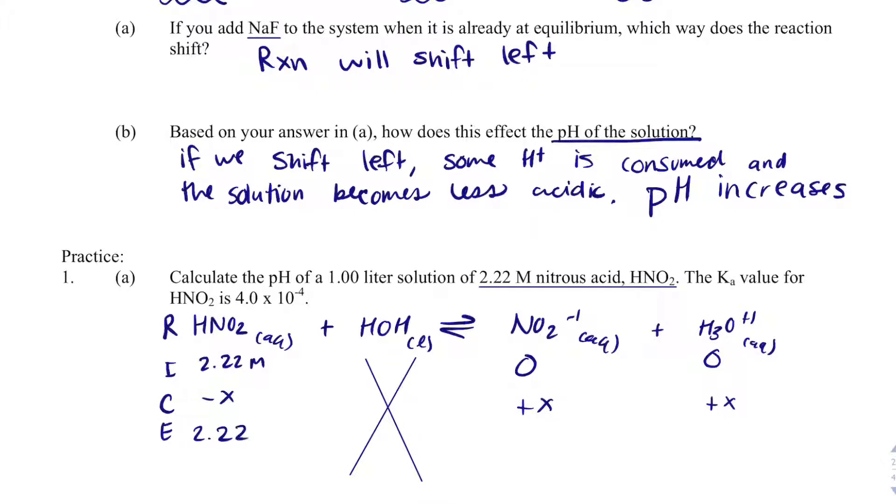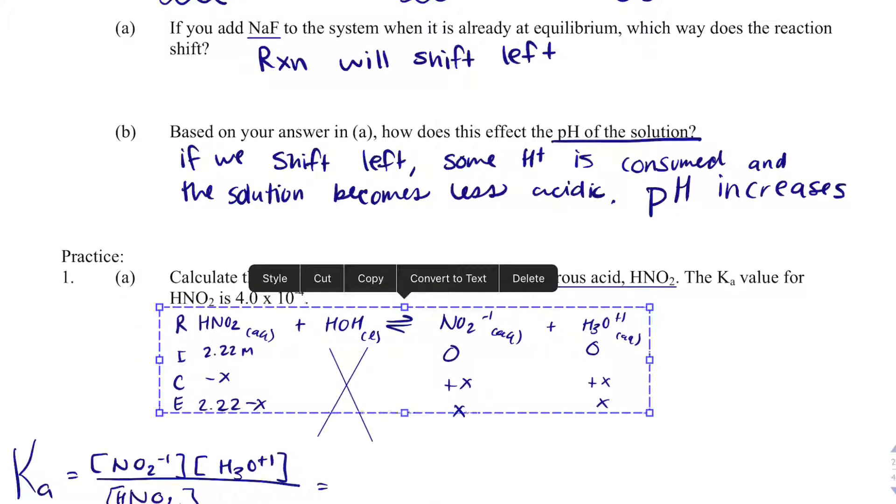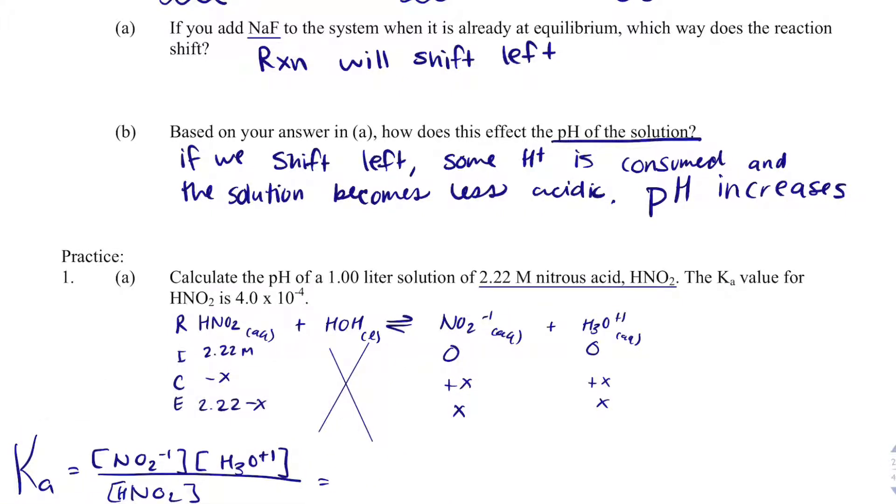We end up with 2.22 minus X, X, and X. So Ka is equal to NO2- times H3O+ divided by HNO2. That will equal X squared divided by 2.22 minus X, which equals 4 times 10 to the minus 4. Using the 5% rule, I can get rid of minus X. And I will solve for X. X is equal to 2.98 times 10 to the minus 2.